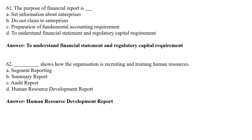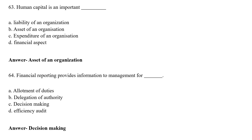Question 62: Dash shows how the organization is recruiting and training human resources. Option A: Segment reporting, Option B: Summary reporting, Option C: Audit reporting, Option D: Human Resource Development Report. The correct answer is Option D — Human Resource Development Report. Human capital is an important asset of an organization.